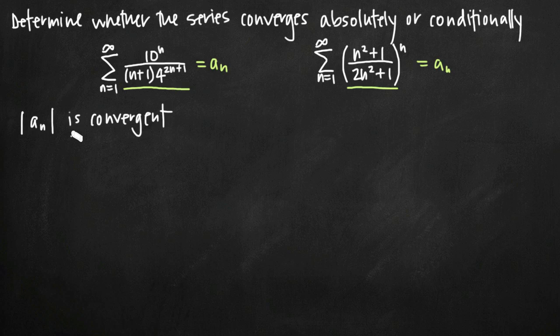Otherwise, it may not be absolutely convergent. This particular part might not be true, but the series in general without the absolute value bars may still be convergent, and in that case it would be conditionally convergent.